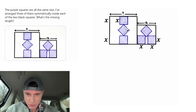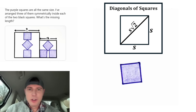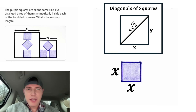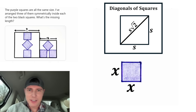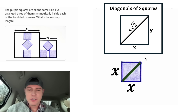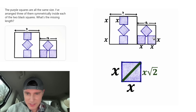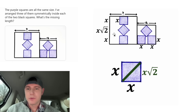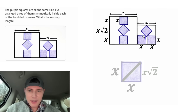Let's zoom in on this. If we look at these notes, the diagonal of any square is equal to square root of two times the side length. So this diagonal is going to be equal to X root two. So that means this distance right here would be X root two.